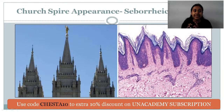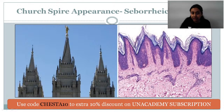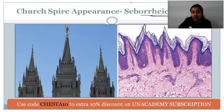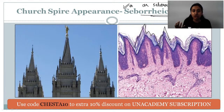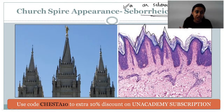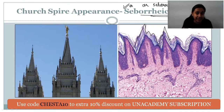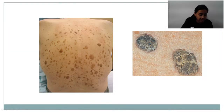The next important point is the church spire appearance, which is seen in case of seborrheic keratosis, also called seborrheic wart. Whenever a question mentions seborrheic wart and asks about the causative etiology — it is not a viral infection. It is a proliferation of the stratum corneum, a pre-malignant condition. The histopathological appearance is the church spire appearance because of proliferation of the stratum corneum. Clinically, lesions give a characteristic 'stuck on' appearance, as if attached to the skin with glue.